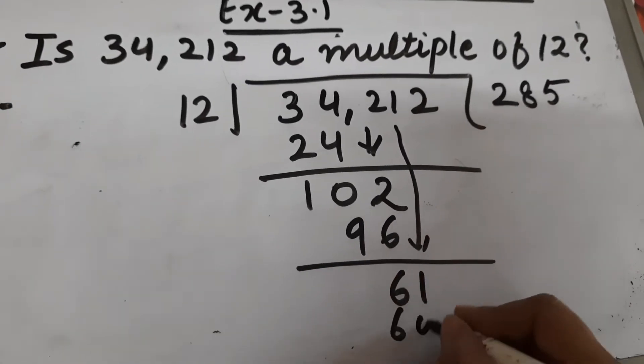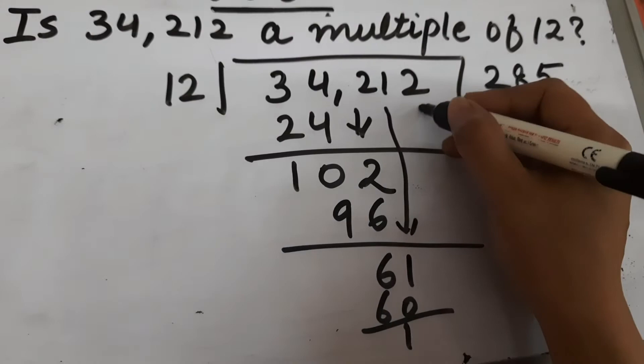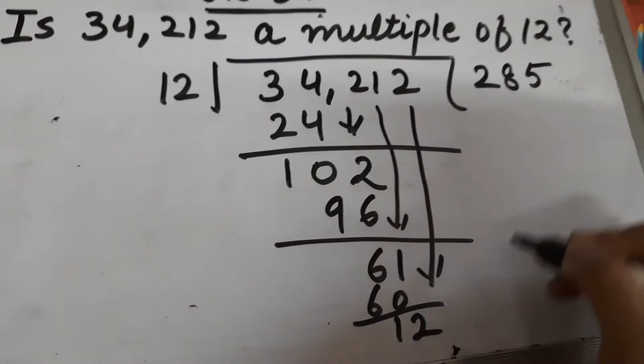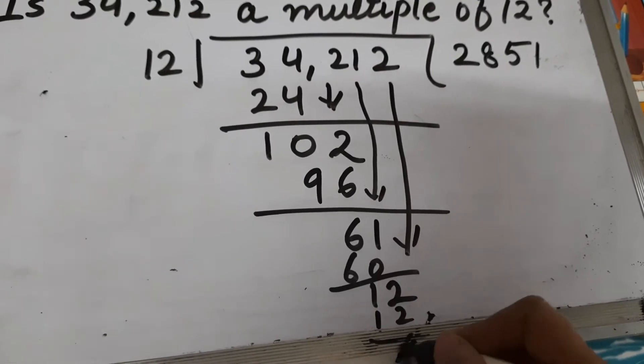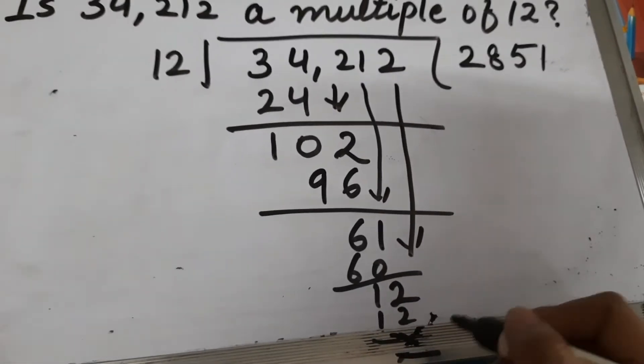61, bring this 2 down. 12 ones are 12. OK, so the remainder is 0 here. The remainder is 0.